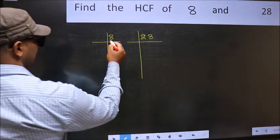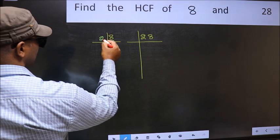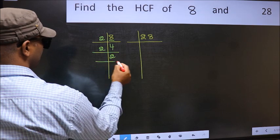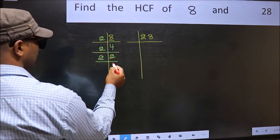Here we have 8. 8 is 2 times 4. 4 is 2 times 2. Now 2 is a prime number, so 2 times 1 is 2.